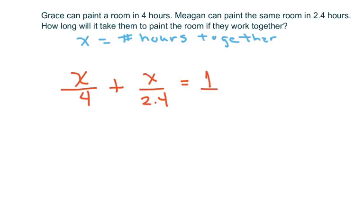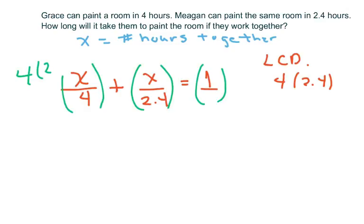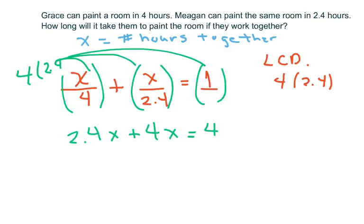And then you multiply by your LCD. Basically, all I did was use my LCD. I didn't have a calculator at the time. It's just 4 times 2.4. So I multiply each piece by that. And you're gonna get 2.4X plus 4X equals 4 times 2.4. And when you simplify this, you're gonna get 6.4X equals 4 times 2.4.